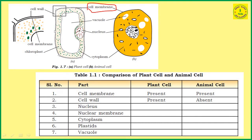Plant cells have a cell membrane, and animal cells also have a cell membrane. So cell membrane is present in both. Next, cell wall — cell wall is present in the plant cell. No cell wall is present in the animal cell.